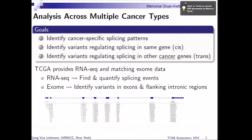The TCGA data is particularly suited because it has RNA-seq data and the matching exome data. For the RNA-seq, we will find and quantify the splicing events. The exome data does, in fact, cover enough of the flanking regions into the intronic regions to actually have variant calls there and try to find cis associations.